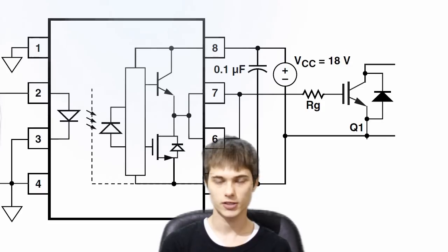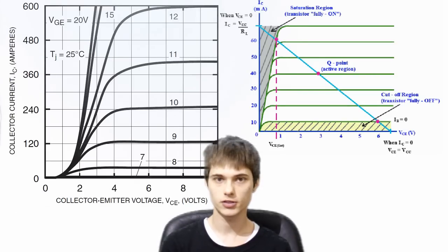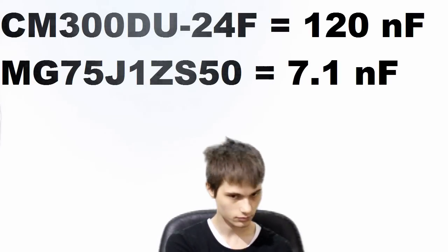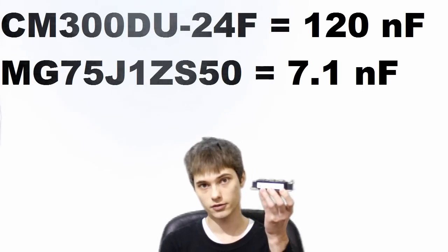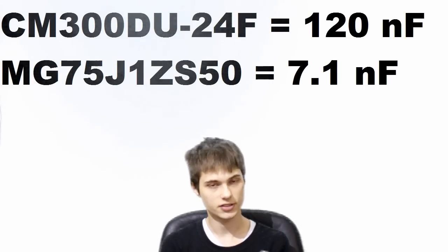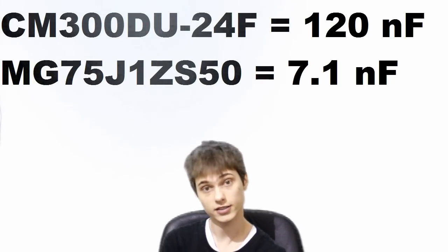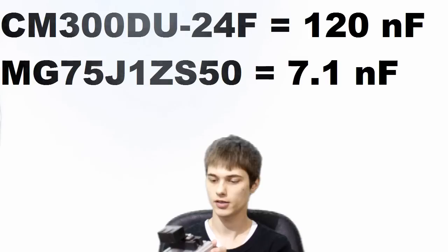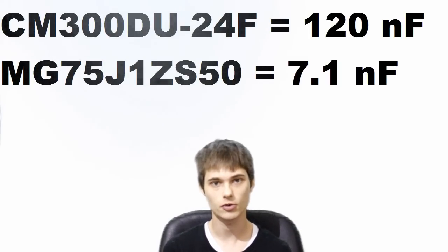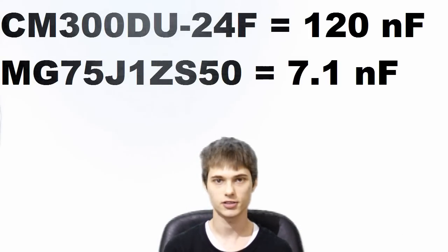This is a very good question. The reason they need to have the right gate resistor is because the voltage of the gate capacitor determines the state of conductivity, and power electronic devices have different gate capacities. For example, this unit here, CM300F series, has a very large gate capacitance. It's going to take a long time for the capacitor to fill up. Whereas something like this here, MG75 has a really small gate capacitance. It's not going to take as long to fill up.